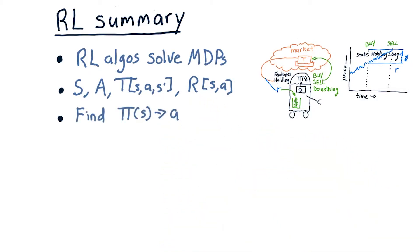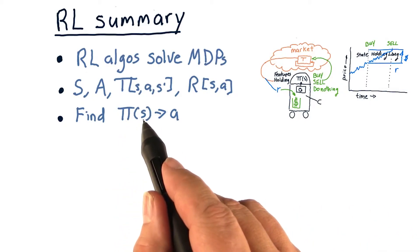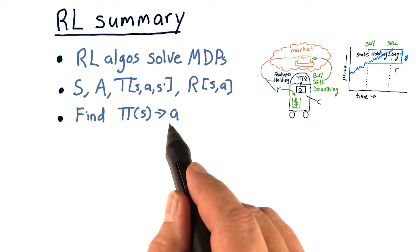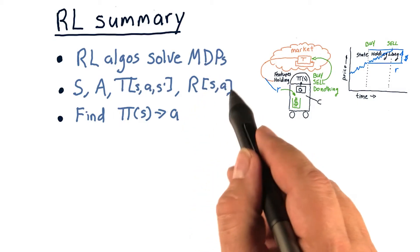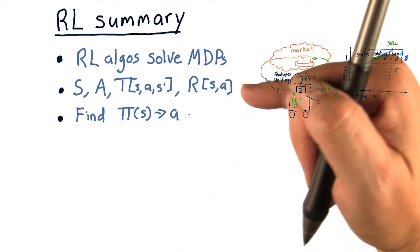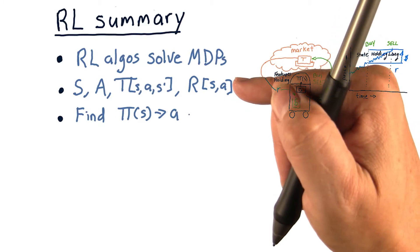The goal for a reinforcement learning algorithm is to find a policy pi that maps a state to an action that we should take, and its goal is to find this pi such that it maximizes some future sum of the reward. We talked about that being either infinite horizon, fixed horizon, or discounted sum.